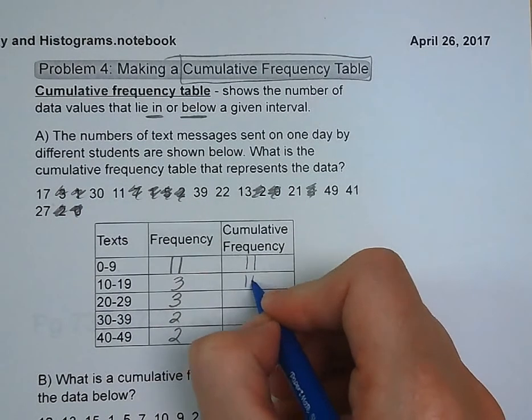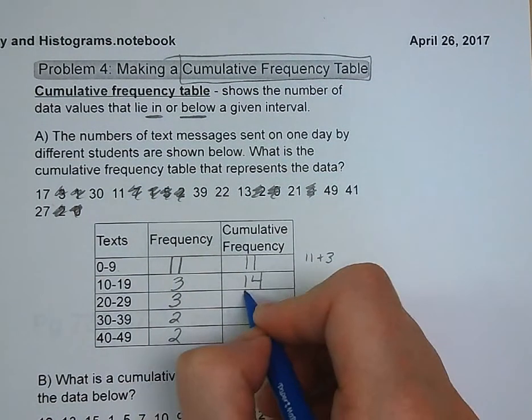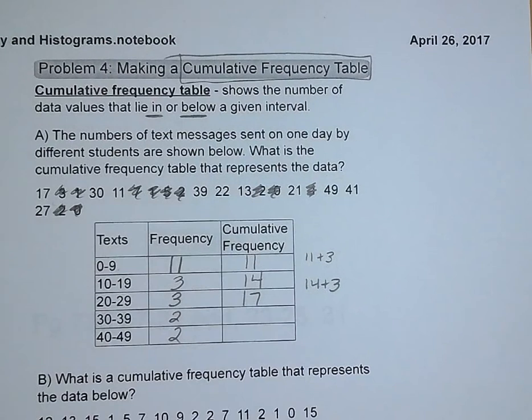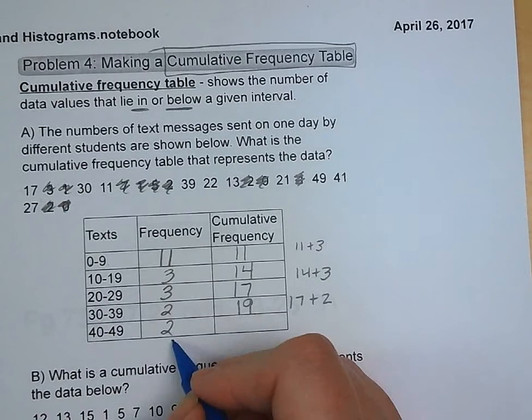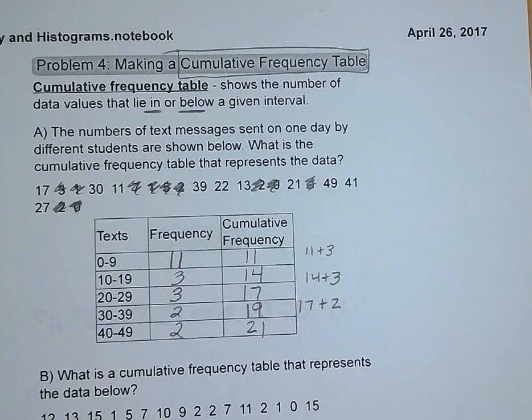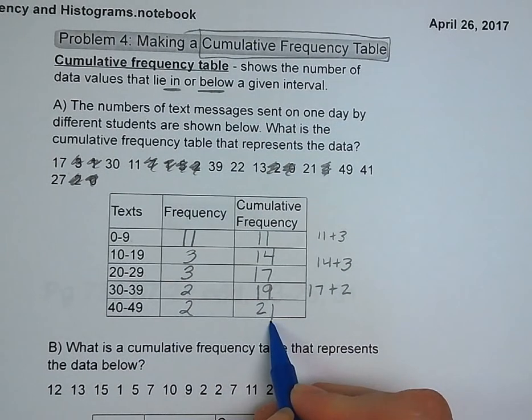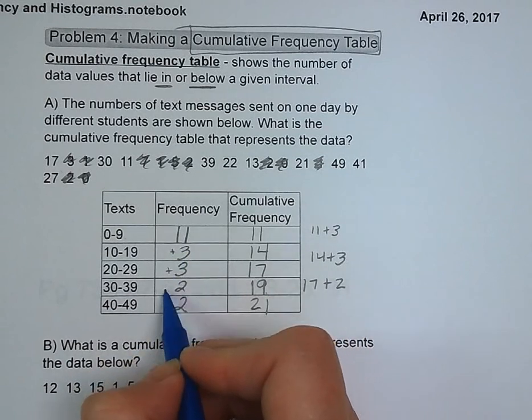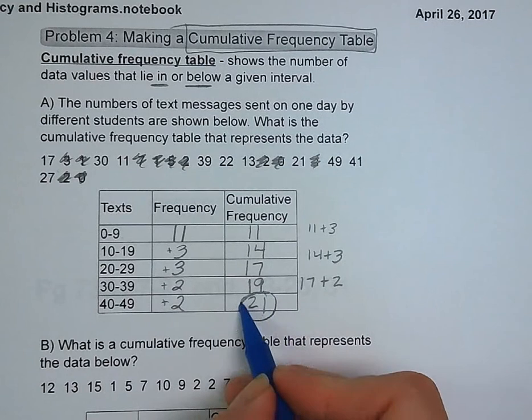Now let's look. Our cumulative total from zero to nine, it's just going to be 11, because that's how many there are in that interval or below. When we go to the next interval, we add the three to it, so now it's 14. Next interval, we're adding three more, so it's a total of 17. Add two more, we're at 19. Add two more, and we're at 21. Your final entry in your cumulative frequency column should be the total number of data points that you have. That's a good way to double-check that you counted everything.